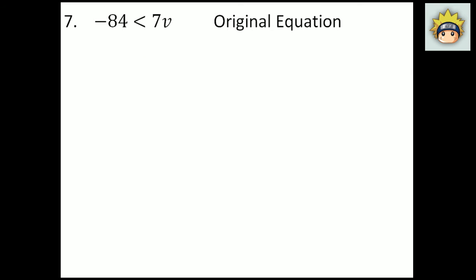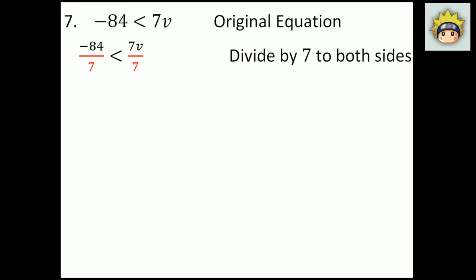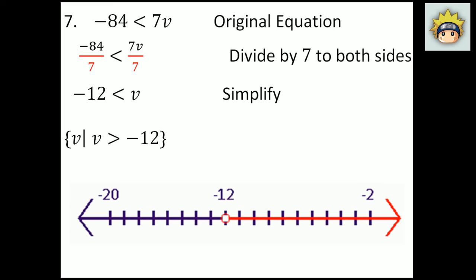Number 7. The original equation is negative 84 is less than 7v. I'm trying to get v alone, so I divide by 7 on both sides. Once I divide 7 from both sides, I get negative 12 on my left-hand side — because negative 84 divided by 7 is negative 12. On the right-hand side I have just v left over. In set builder notation: v, v is greater than negative 12. It is open at negative 12 going all the way to the right — so negative 11, negative 10, negative 9 would make this valid.